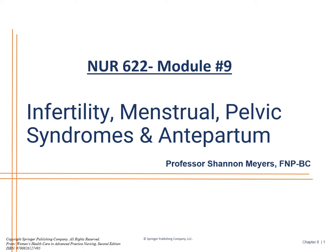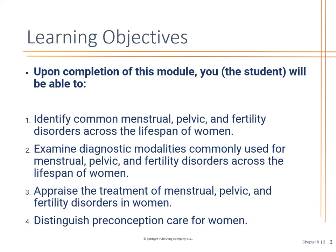This is Nursing 622, Module 9, where we talk about infertility, menstrual and pelvic syndromes, and antepartum care. Your learning objectives are to identify the menstrual, pelvic, and fertility disorders across the lifespan, including adolescents, common diagnostic modalities, treatment plans, and preconception care for women.